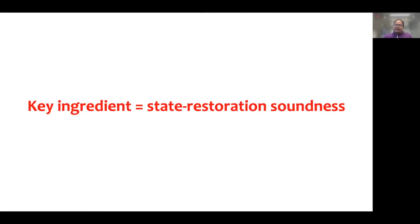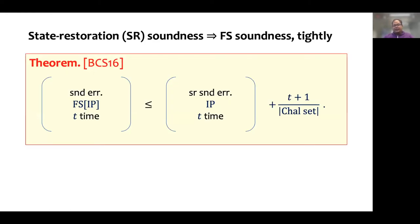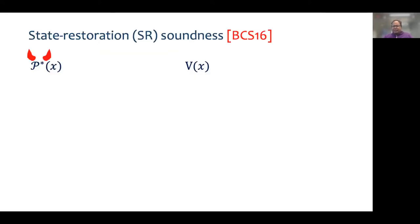The key ingredient of our approach is to analyze the notion of state restoration soundness. The state restoration soundness error of an interactive protocol is roughly an upper bound on the soundness error of the non-interactive protocol resulting from the Fiat-Shamir transform. Simply stated, this notion gives the cheating prover the additional power to restore the verifier to any of its previous states and resume its execution from there. Let me illustrate what I mean through an example of a protocol with two rounds.